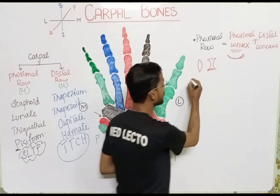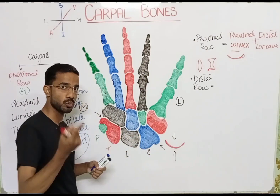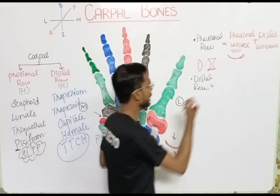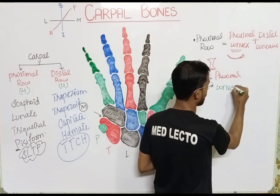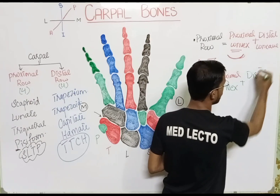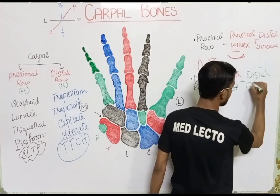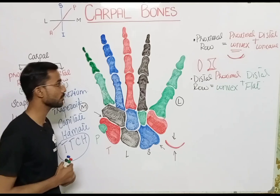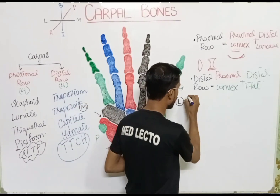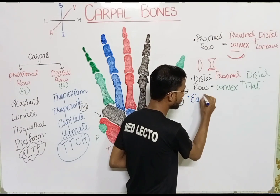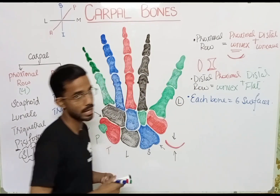For the distal row, it similarly has a proximal and a distal side. The proximal side of the distal row is again convex. But the distal side of the distal row is flat. Each carpal bone has six sides or six surfaces. This is an important point.